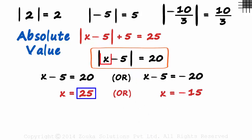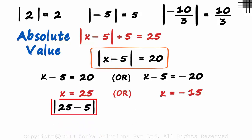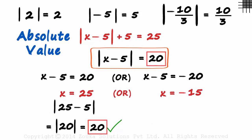Substituting 25 in place of x, we get absolute value of 25 minus 5. That equals absolute value of 20 which is also 20. This is equal to the right hand side. x equal to 25 is correct.